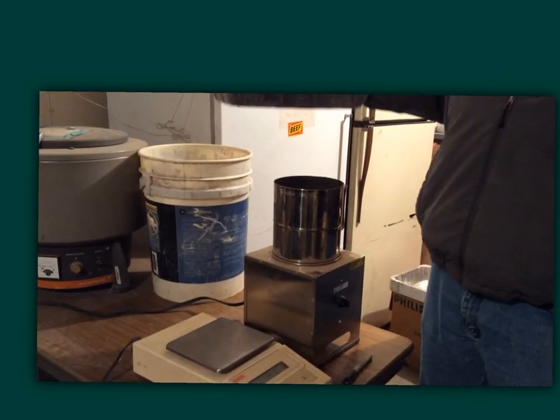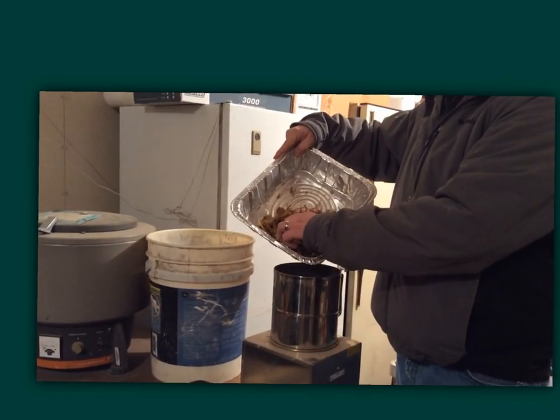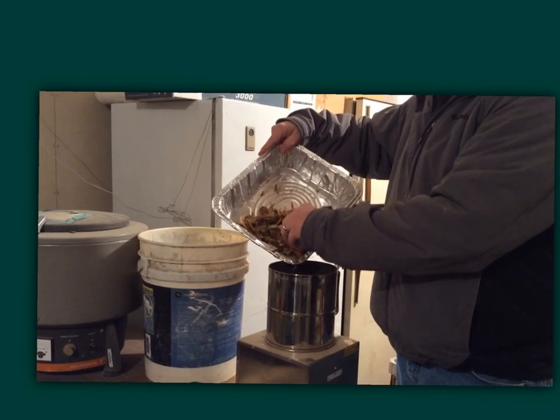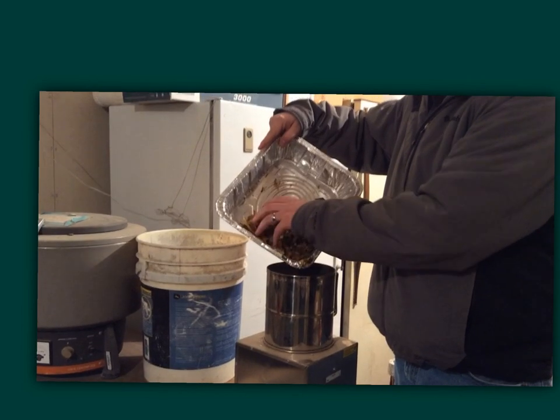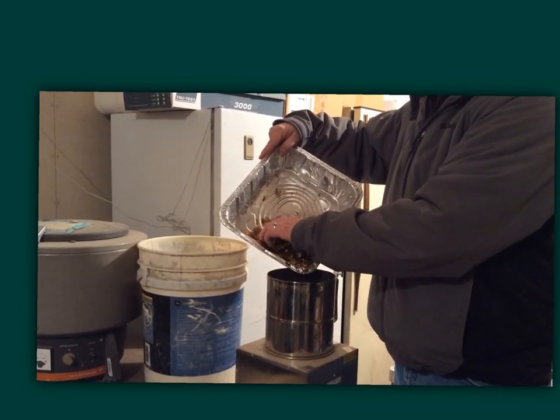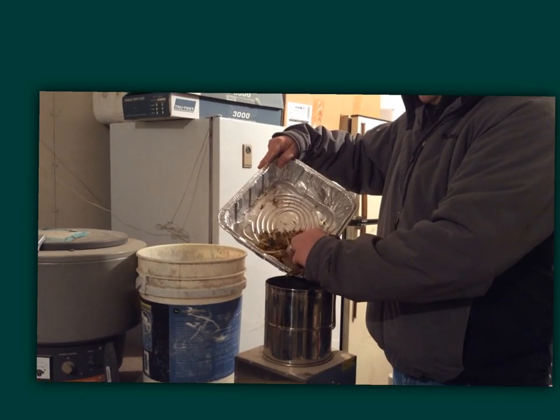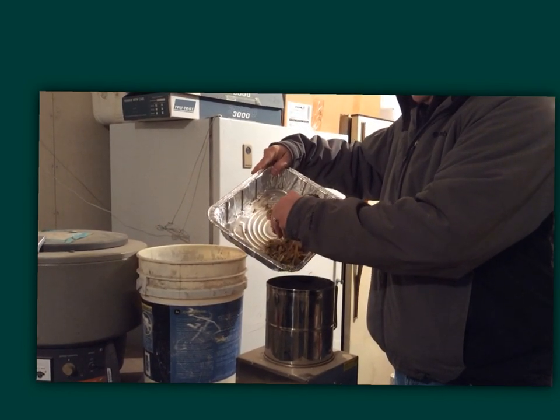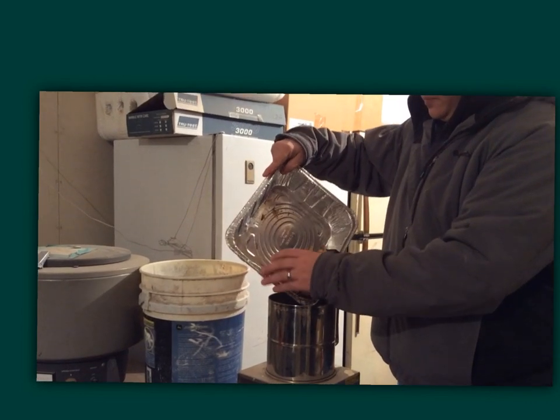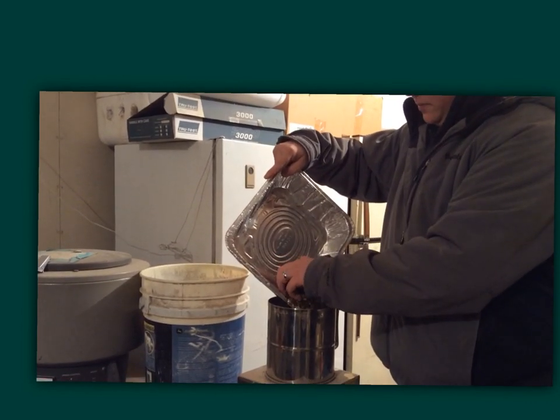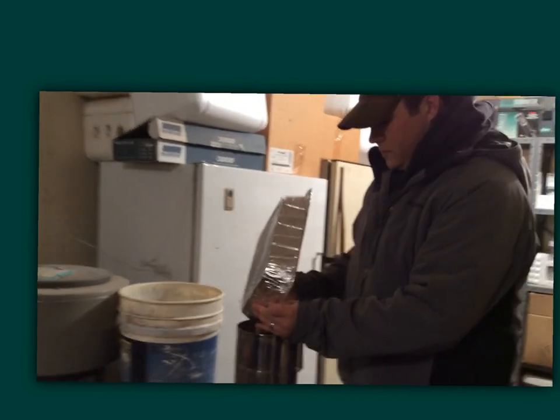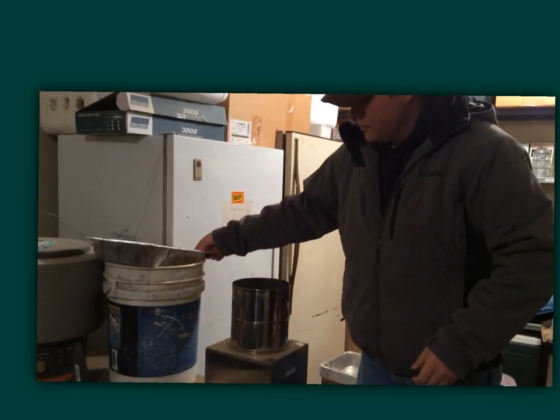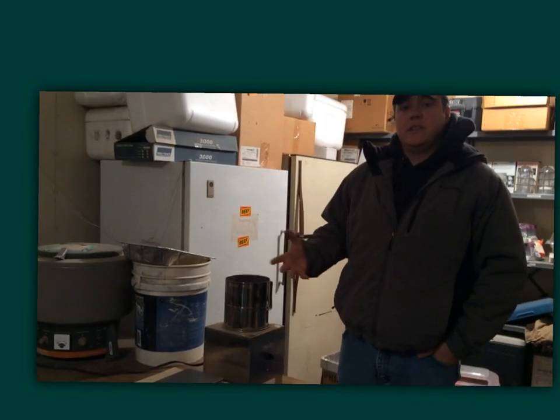Next, we'll add the silage into our drying oven, keeping careful not to spill any because that will affect our overall dry matter in the long run. And then we'll allow that to dry. With this type of oven, it should only take about an hour.